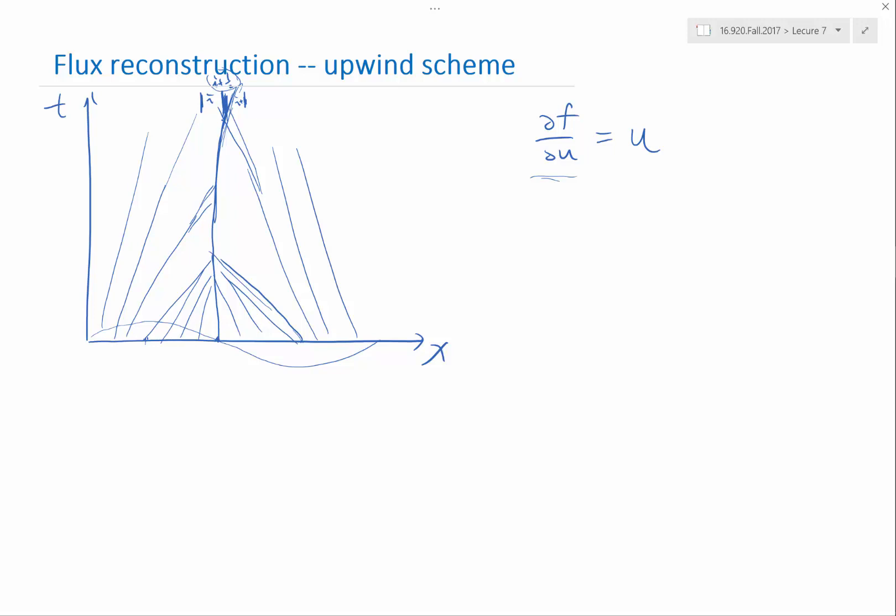So that's what happens. If we use a central flux reconstruction scheme, the problem is that we will be using half of the information from the other side of the discontinuity. When I'm trying to reconstruct the flux here, I'm actually using both sides, which is actually not physically correct.